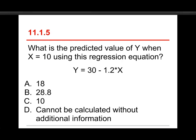All right, number five. What is the predicted value of y when x equals 10 using this regression equation? And we have y is equal to 30 minus 1.2 times x. The choices are 18, 28.8, 10, or cannot be calculated without additional information. The choice here that you want is 18, and here's how it works.